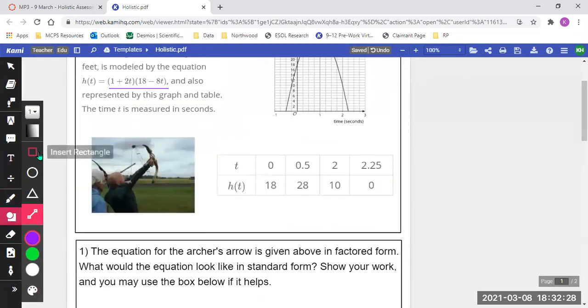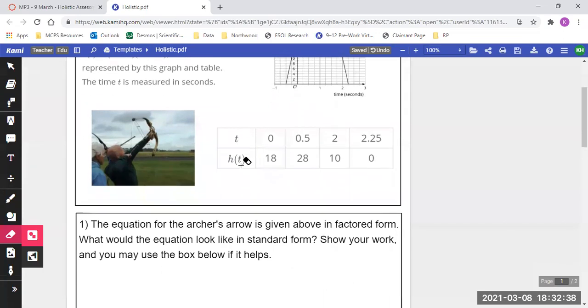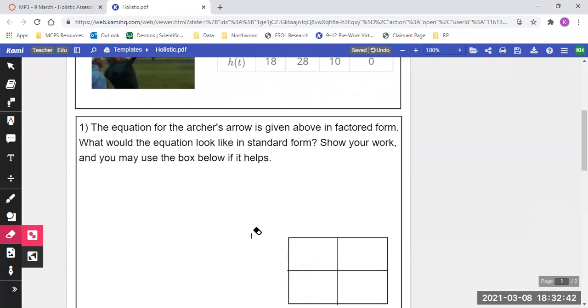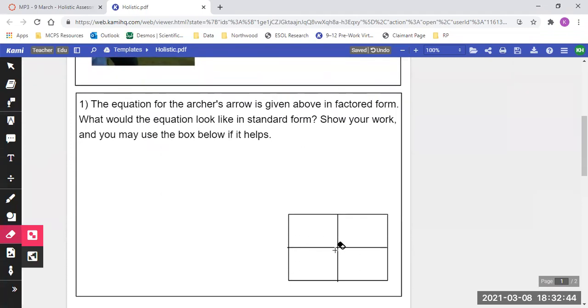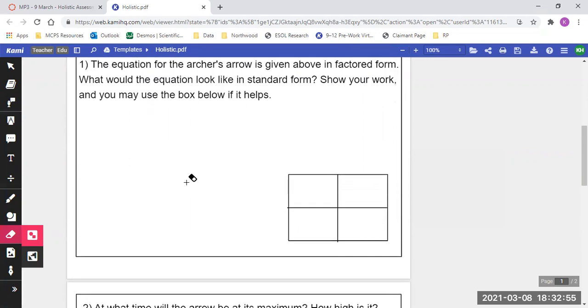Don't want to do that, but I'm just showing you here. That is our factored form. What would the equation look like in standard form? Show your work, and you may use the box below if it helps. So here's this box that I set up for you. You may do it this way. You may use binomial multiplication, whatever it may be, but I want it in the end to be in that ax squared plus bx plus c form.